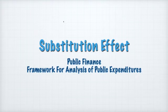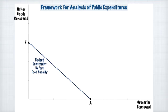Here we have a budget constraint for an individual before the food subsidy comes into place. We're looking at two goods categories: groceries consumed and all other goods consumed. This budget constraint maps out what is affordable for this person given their income level and given the prices of those two categories — groceries and all other goods consumed.